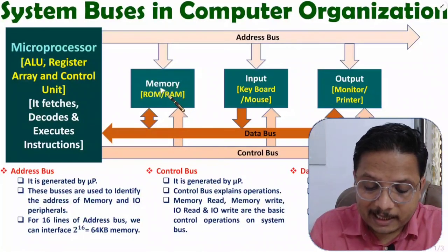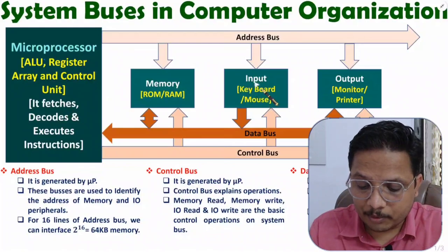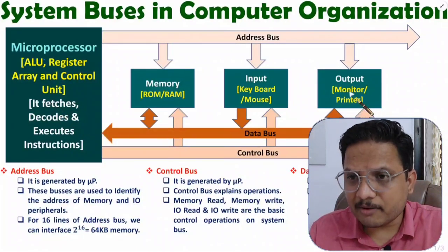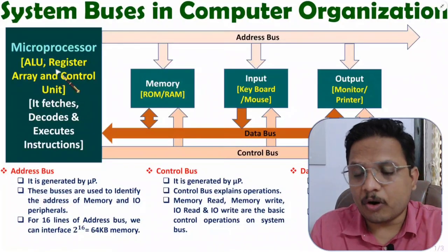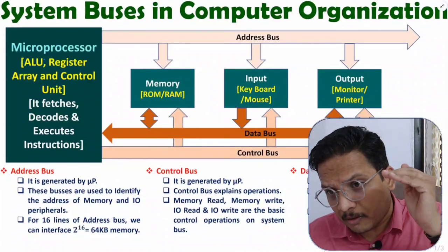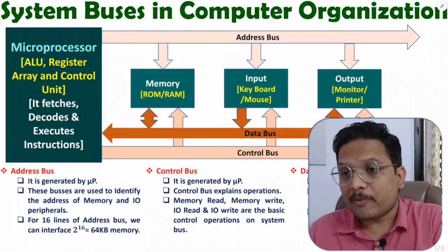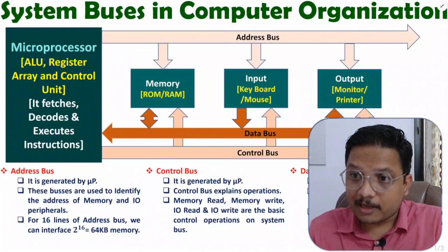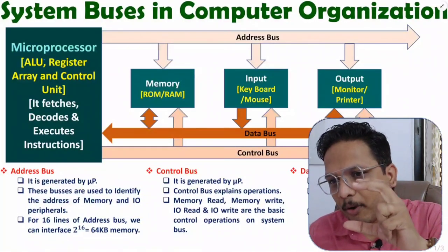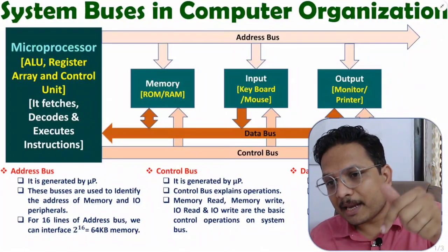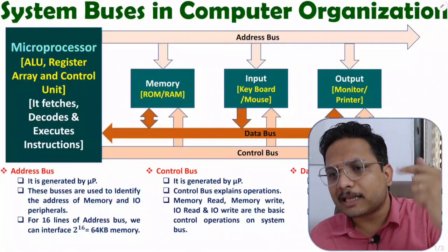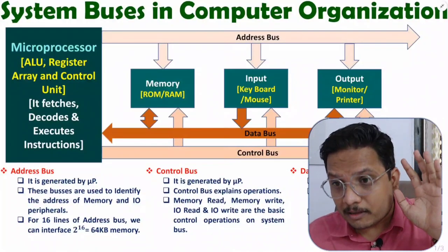You can see here that memory is interfaced with this CPU. Input devices like keyboard and mouse are also interfaced with the CPU, or you can say with the microprocessor. Basically, in a computer, when you interface IO peripherals, or when you interface memory, or when you interface a computer in a computer network, at that time you will have to interface the system bus. Or when you interface one computer with another computer, at that time also we interface via system bus.